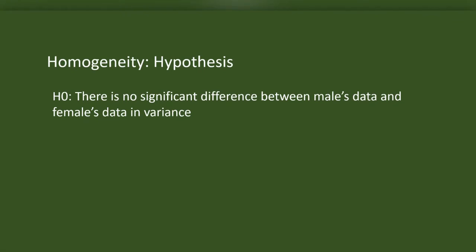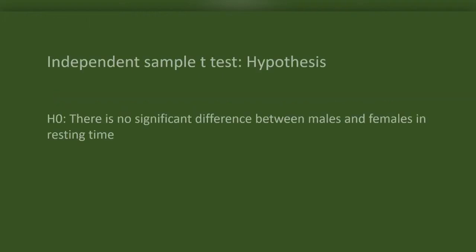Before doing the independent sample t-test in SPSS, we need to consider homogeneity of variance. The two independent samples have to be homogeneous, meaning we should have homogeneity of variance in the two groups. SPSS uses Levene's F-test to test this homogeneity. The hypothesis for the independent sample t-test is: there is no significant difference between males and females in resting time.